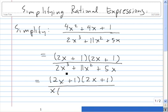If we factor an x from 2x cubed, we're left with 2x squared. From the 11x squared, we're left with plus 11x. And finally, if we factor an x from 5x, we're left with a plus 5.